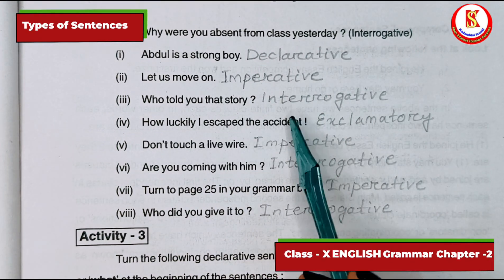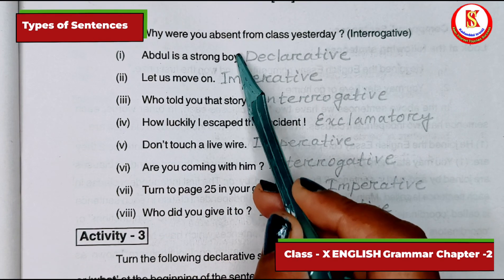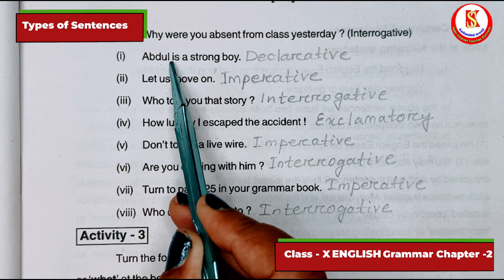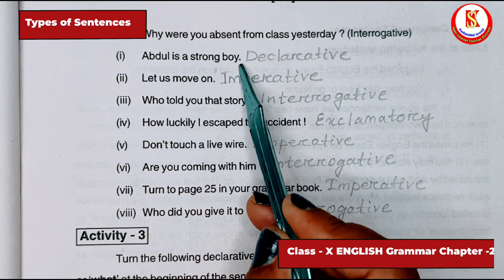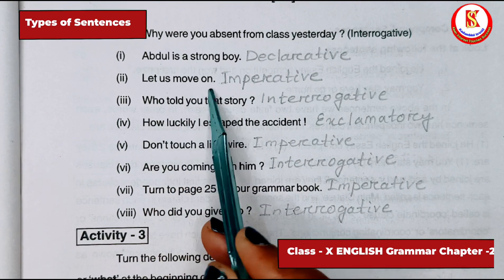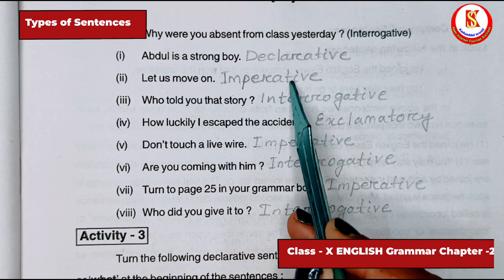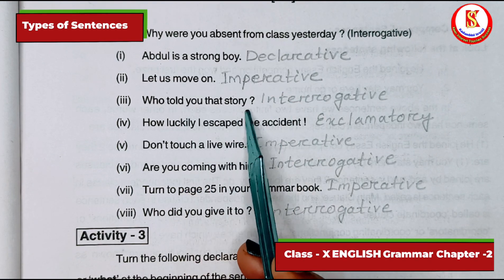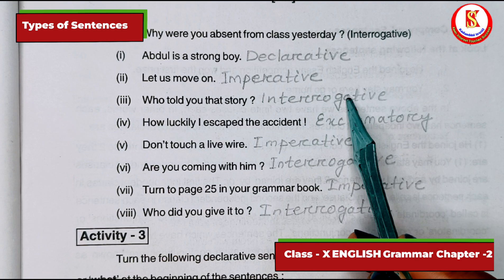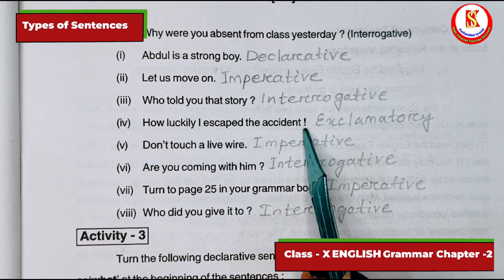In activity two, we have to mention the type of simple sentence. 'Abdul is a strong boy' — it ends with a full stop and starts with a subject, so it is a declarative sentence. The next sentence also ends with a full stop but starts with a verb, so it is an imperative sentence. 'Who told you that story?' — there is a question mark, so it is an interrogative sentence.